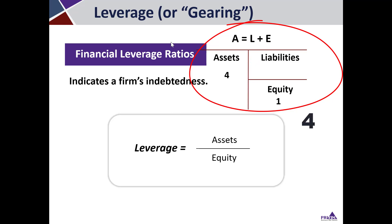would mean that you have four dollars of assets to every one dollar of equity, which means you must have had three dollars of liabilities.